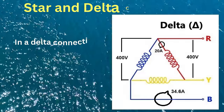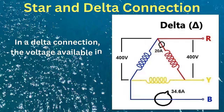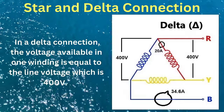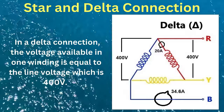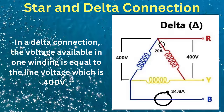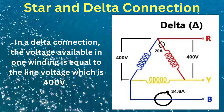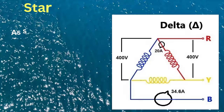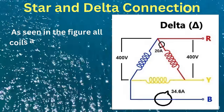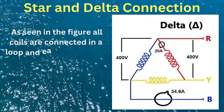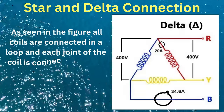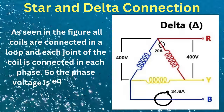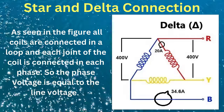In a delta connection, the voltage available in one winding is equal to the line voltage, which is 400 volts. As seen in the figure, all coils are connected in a loop and each joint of the coil is connected to each phase. So in delta, the phase voltage is equal to the line voltage.